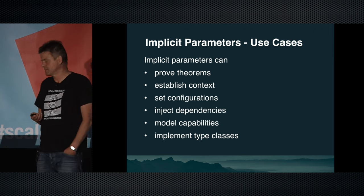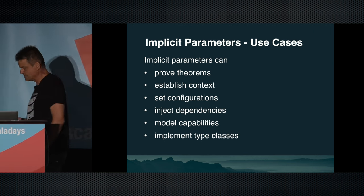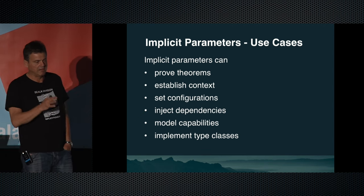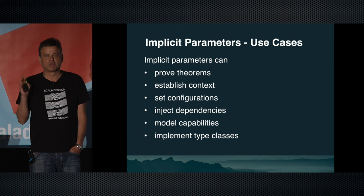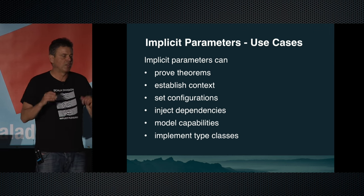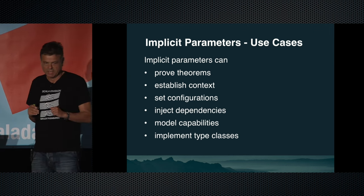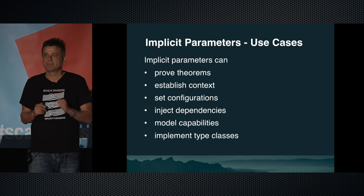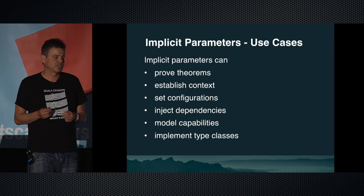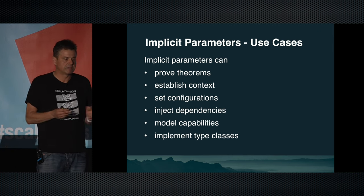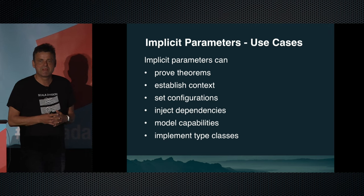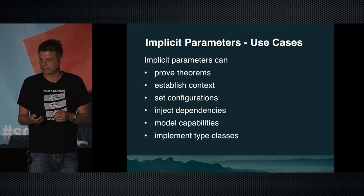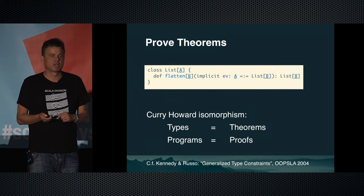Implicit parameters have a surprisingly large number of use cases — I had to cut down the list to fit on one slide. Implicit parameters can prove theorems, establish context, set configurations, inject dependencies, model capabilities, and implement type classes. Let's look at some of these.